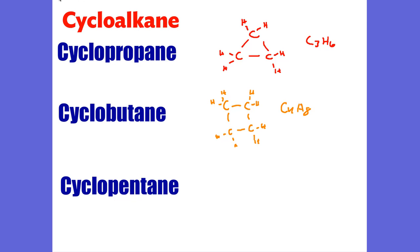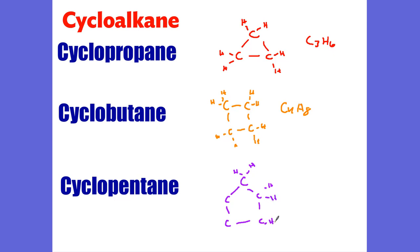And then we also have cyclopentane. Cyclopentane is going to look like this. You can see it's in a pentagon-type form, or a home plate. Each carbon is going to have our hydrogens coming off of it. The chemical formula for this is C5H10.